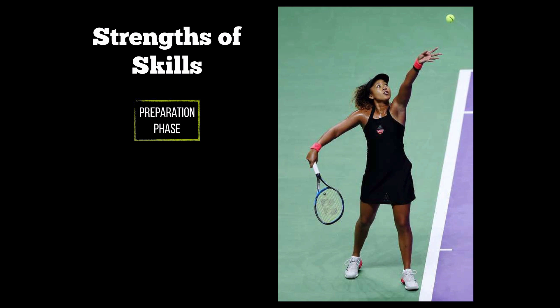One strength for the tennis player I observed was her kick serve. This was a strength because in the preparation phase, she had her feet planted shoulder-width apart, her body was side on, and she had a good relaxed starting position. Her toes were behind the line of where she was serving, and her body was facing towards where she wanted the ball to go. During the execution phase, she had a high ball toss to help generate more power, and bent her knees to allow for maximum reaction force with the ground. As she made contact with the full face of the racket, she struck the ball above the centre of mass, allowing topspin to be generated onto the ball.